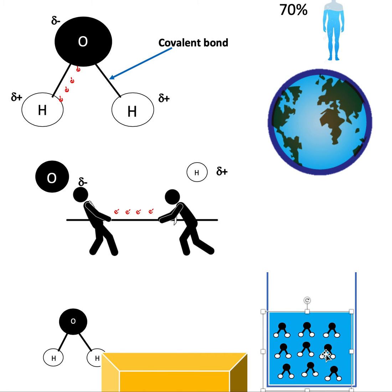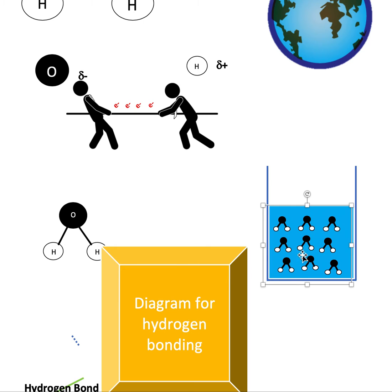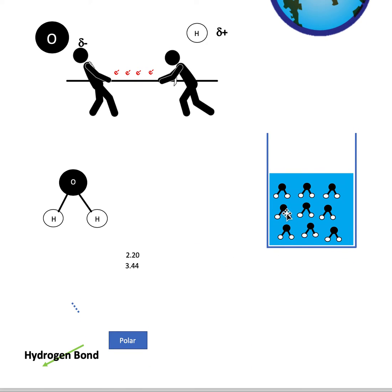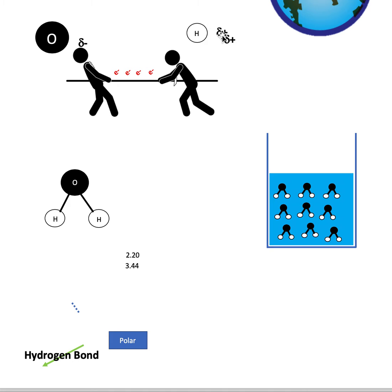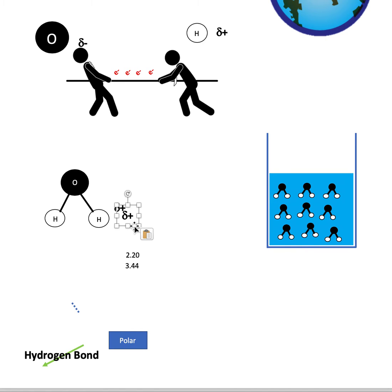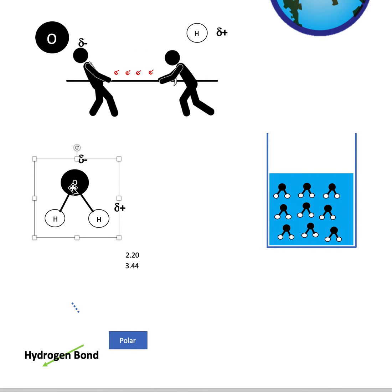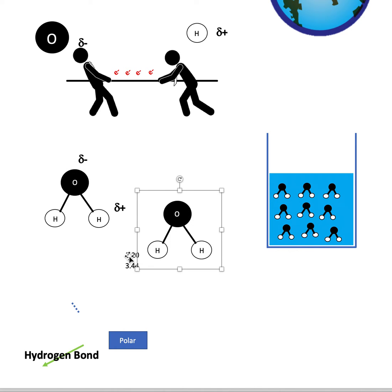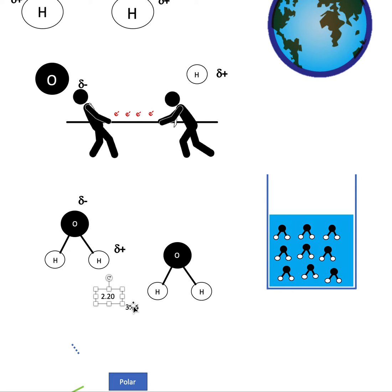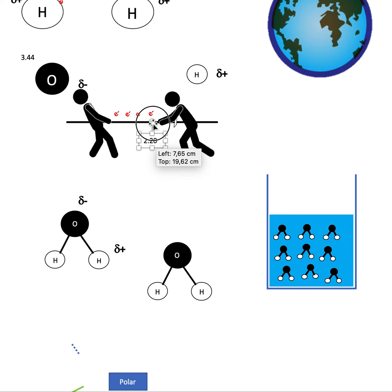Knowing that oxygen is negatively charged because it pulls electrons more strongly, and hydrogen is more positively charged because it doesn't pull as strongly, we can apply this in water to see why water is so interesting. There's actually a number in science that determines how strongly each element can pull. Oxygen has a strength factor of 3.44 and hydrogen has a strength factor of 2.20, so you can clearly see oxygen should be pulling stronger.